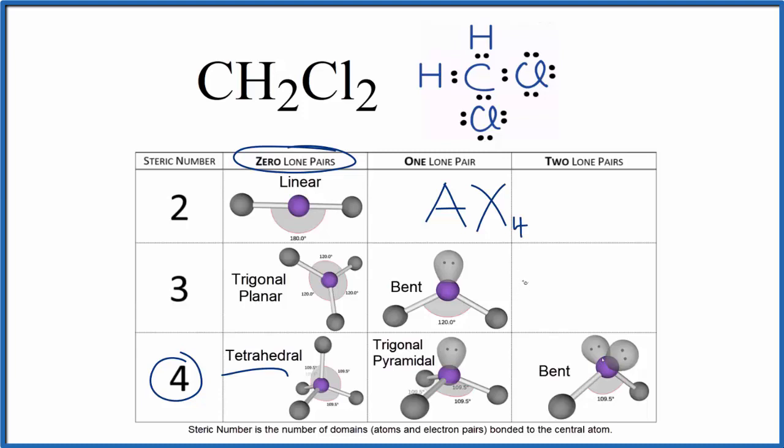And E is the number of lone pairs, except we don't have any lone pairs. If you looked up AX4 on a table for molecular geometry, you'd see that it's tetrahedral, just like we found before. And the bond angles between the atoms would be about 109.5 degrees.